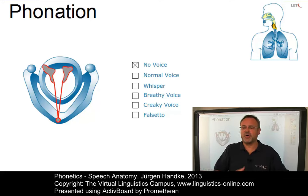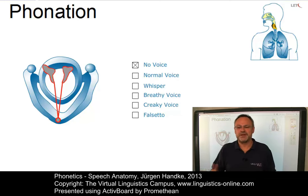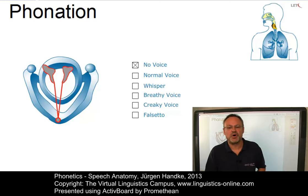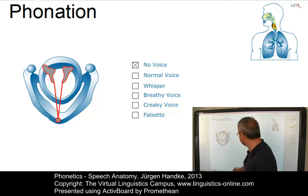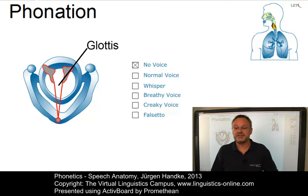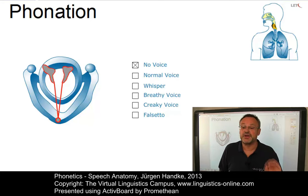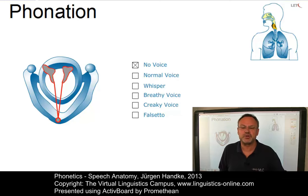Voicelessness, or nil phonation, is the default — a type of phonation, well, not real phonation, which is used during normal breathing. It requires a more or less wide opening of the glottis — here you see the glottis — resulting in glottal silence, provided that the rate of transglottal airflow is below the level that would generate local turbulence at the glottis.